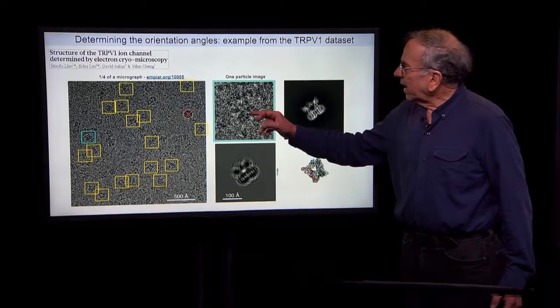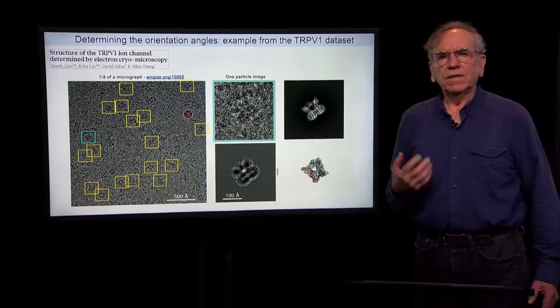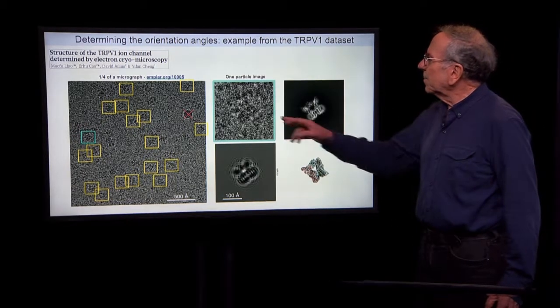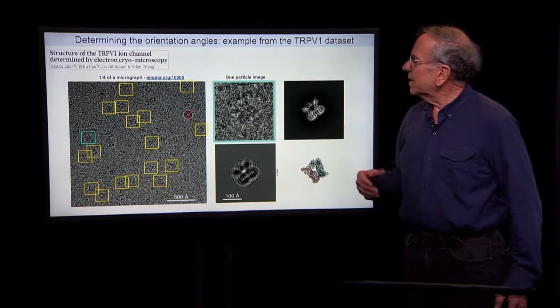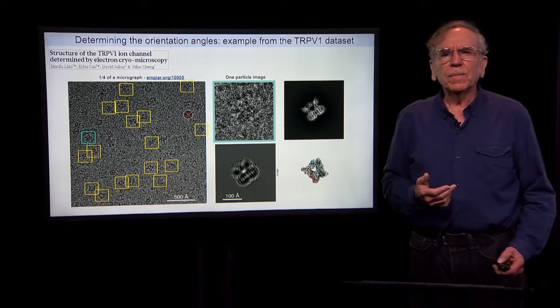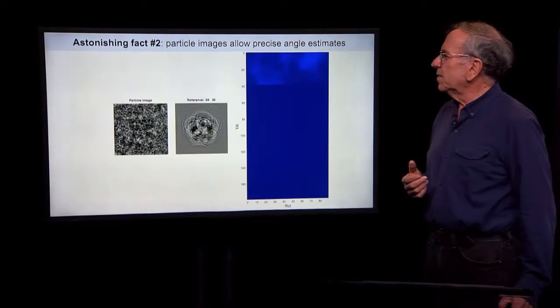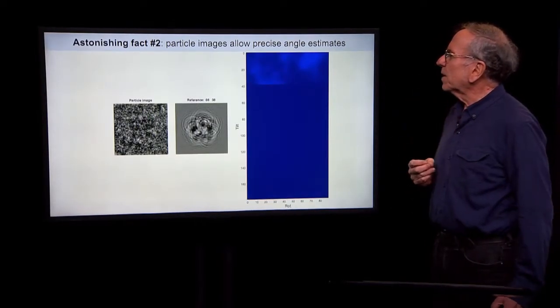This is what the microscope image is expected to look like. And then, as actually recorded with a lot of noise, as we'll see next time, this is what the image looks like. So the question is, can we somehow, from this image, determine what is the orientation of the underlying three-dimensional particle?